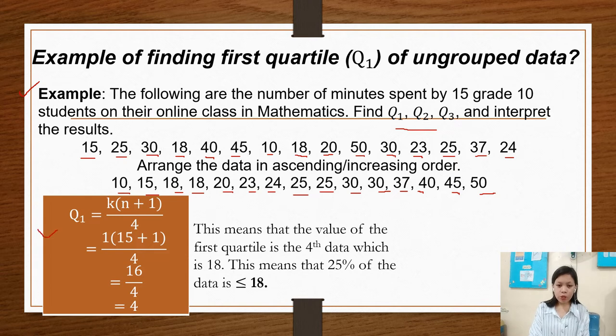So we have here the formula. Q sub 1 equals k times n plus 1 over 4. Over 4 since quartile is divided into 4 equal parts. Since we have to find the first quartile, our k is 1 times 15, our n or the total number of data, which is 15 plus 1 over 4. So equals 16 divided by 4, which is 4. This means that the value of the first quartile is the fourth data, which is 18. This means that 25% of the data is less than or equal to 18.